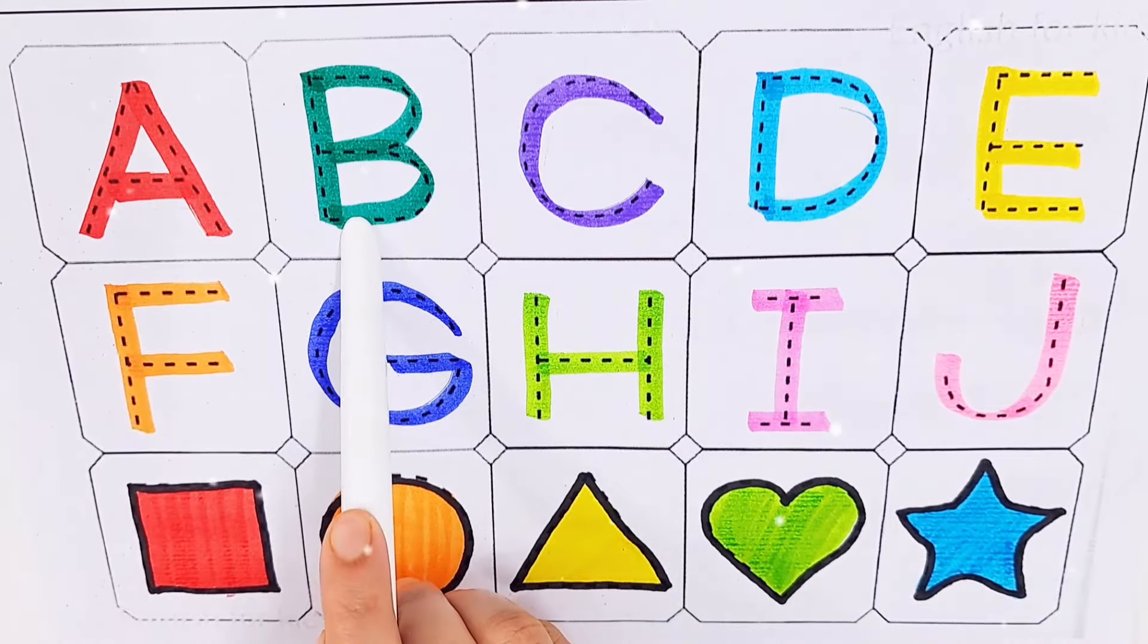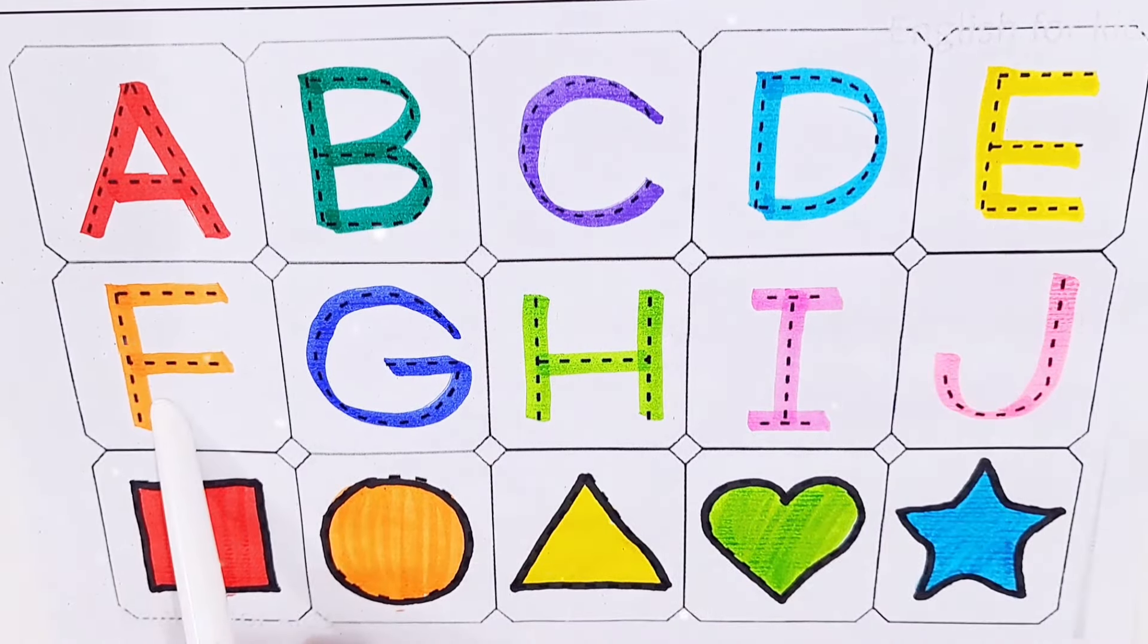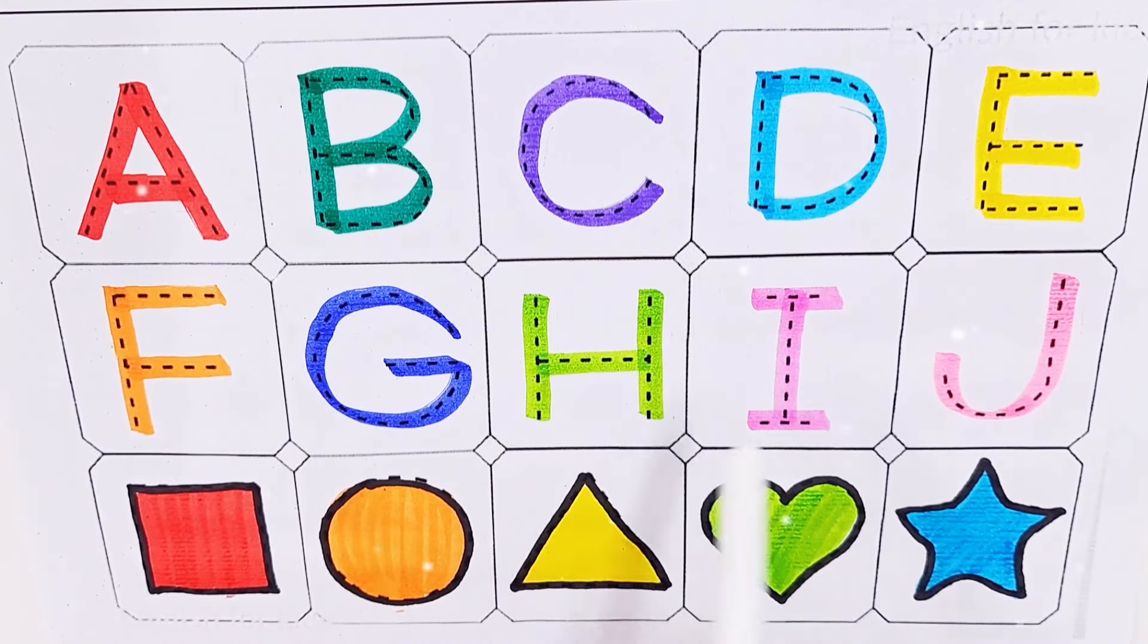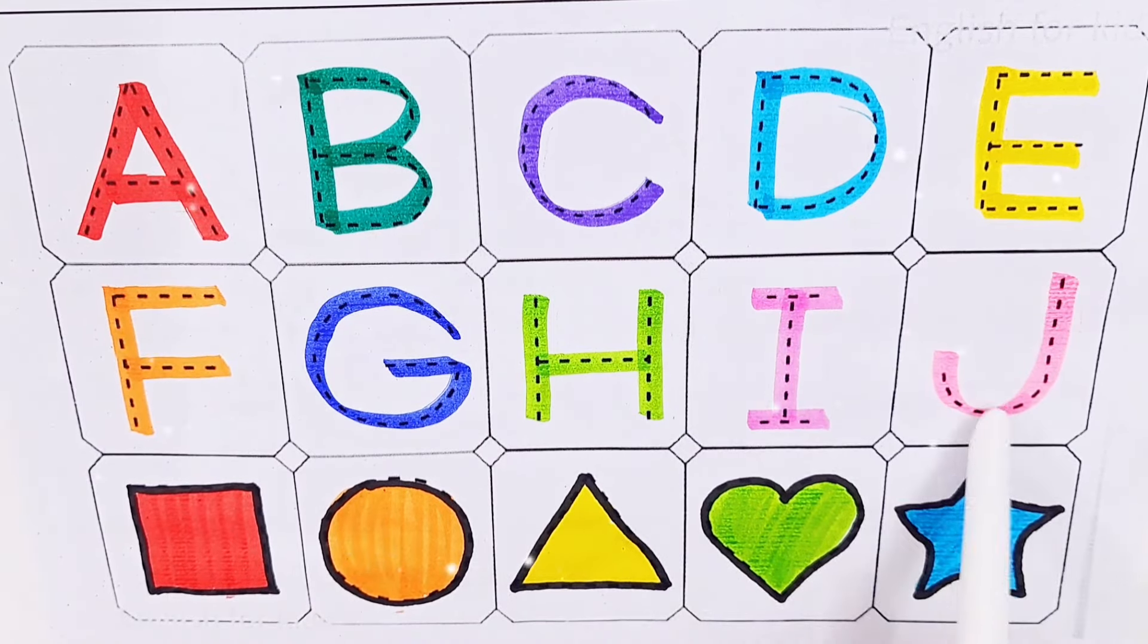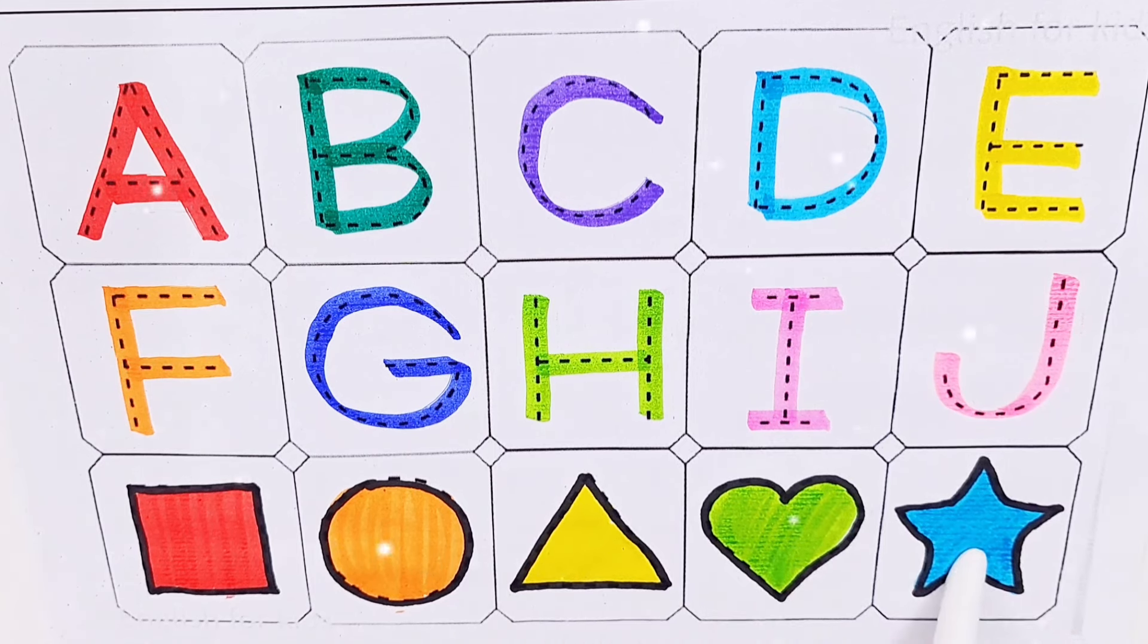A, B, C, D, E, F, G, H, I, J. Square, circle, triangle, heart, star.